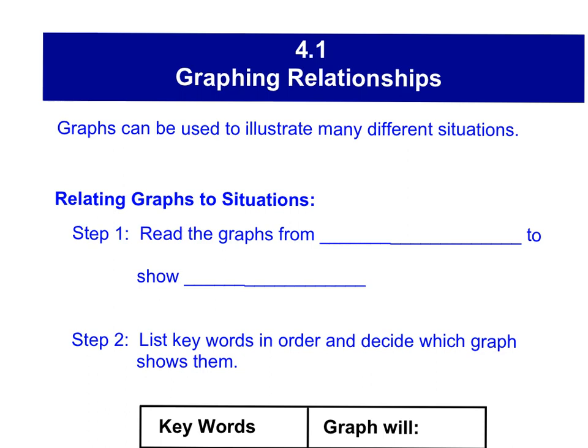Starting out Lesson 4.1, we are talking about graphing relationships. Graphs can be used to illustrate many different situations. You guys have seen a lot of graphs before. However, when we relate graphs to situations, there's a couple things we want to keep in mind. Graphs are going to be read from left to right to show time passing. So every time you see a graph, kind of like you read a sentence, from the left to the right, and that will show you what's happening as time is passing.